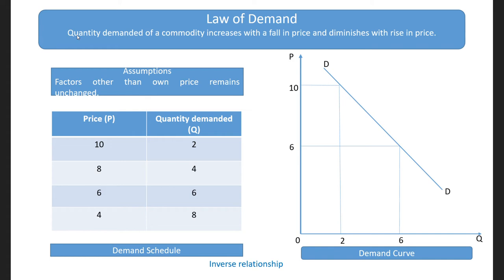In the demand schedule, when the price of a particular commodity is Rs.10, the consumer demanded 2 units of the good. When its price falls to Rs.8, demand increases to 4 units. When its price further falls to Rs.6, its demand further increases to 6 units. And when price further falls to Rs.4, its demand again increases to 8 units.